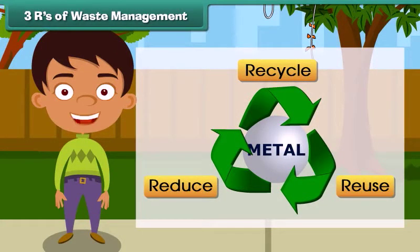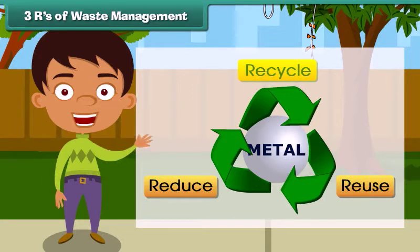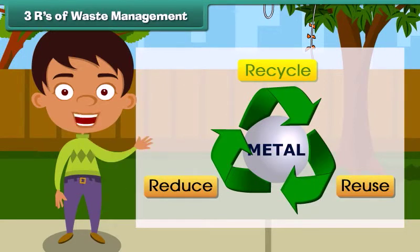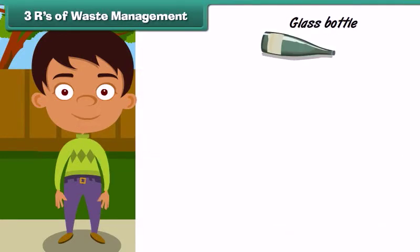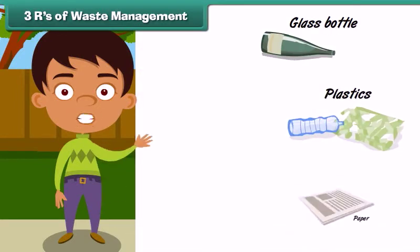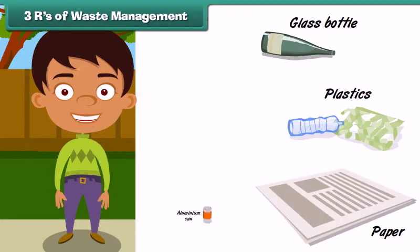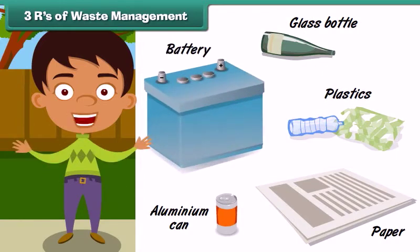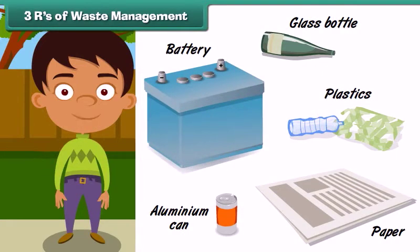The first R stands for recycle. Recycle means to process old, used items in a way that they can be used to make new products. For example, items made of glass, plastic, newspapers, aluminium cans, and batteries can be recycled to make new products.